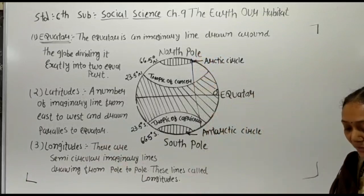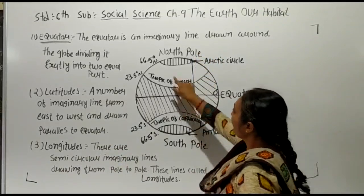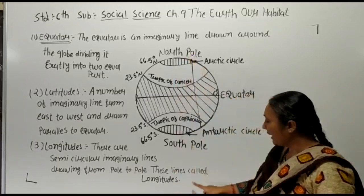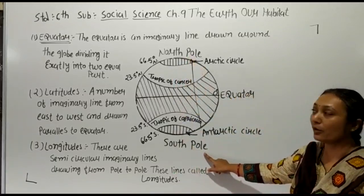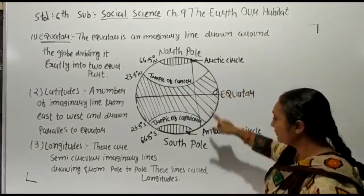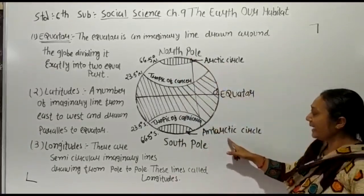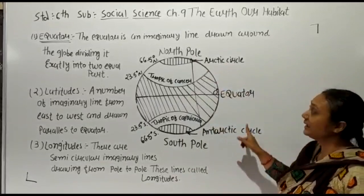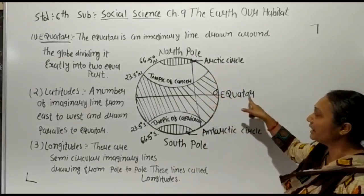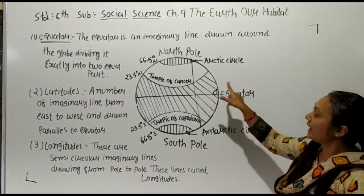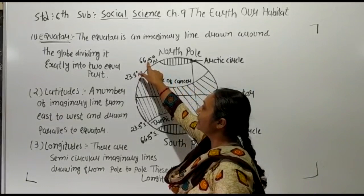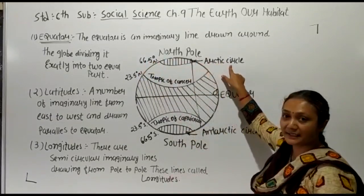Longitude lines go from the north part to the south part — pole to pole. In the north part there is the Arctic Circle, while in the south part there is the Antarctic Circle. The Arctic Circle is at 66.5° north, and the Antarctic Circle is at 66.5° south.